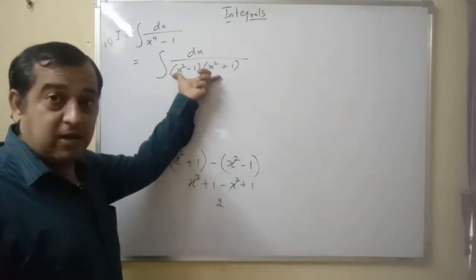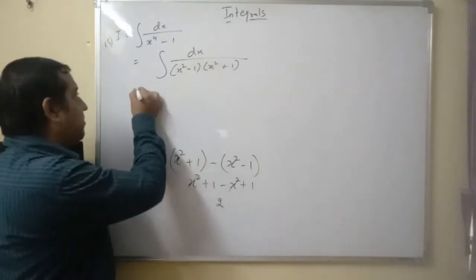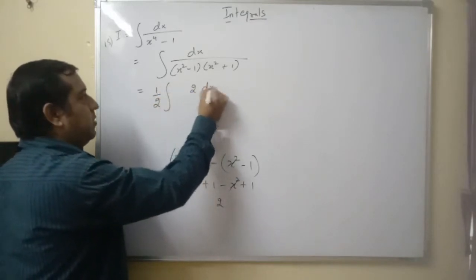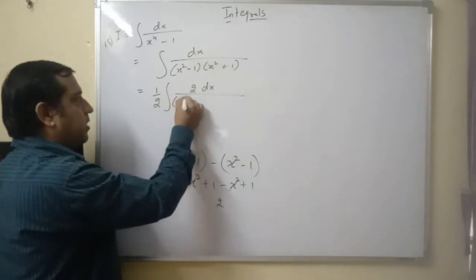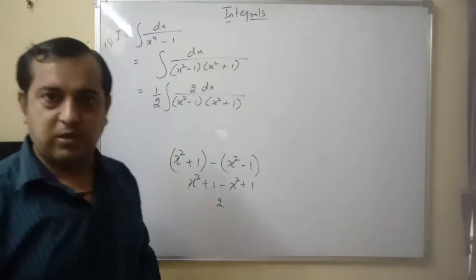You can notice that these two brackets in the denominator, their subtraction gives 2. So what you do? Multiply and divide by 2. 1 by 2 integral, 2 dx upon x square minus 1 into x square plus 1. You can do this.